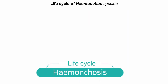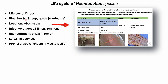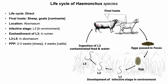Life cycle of Hemonchus species. The life cycle is direct as there is no involvement of an intermediate host. Final hosts are sheep, goats, cattle, and other ruminants. The location of the parasite is in the abomasum, and the infective stage is L3. The female parasite in the abomasum lays eggs which pass with the feces. In the environment, eggs develop to L1, then L2, and L3 within a week. In cool conditions, this developmental period may take a month or so.